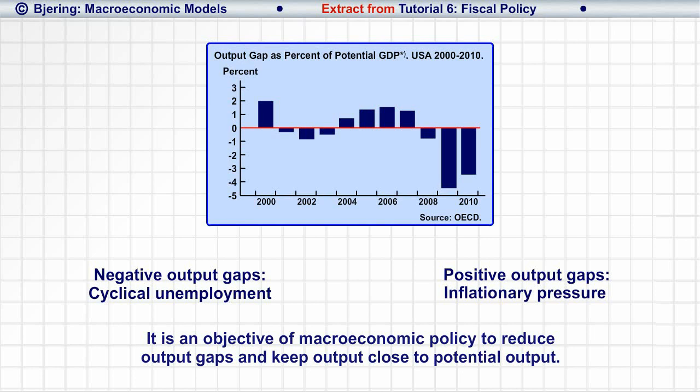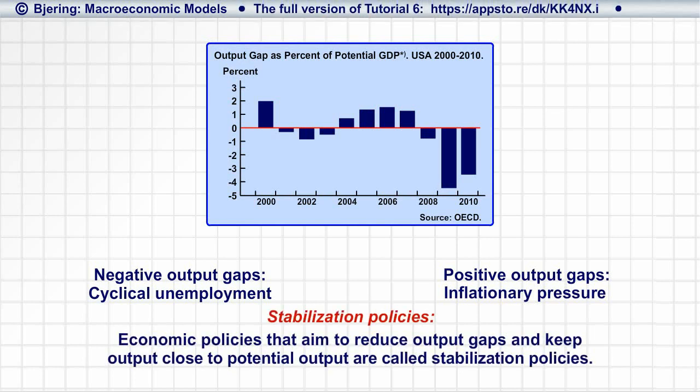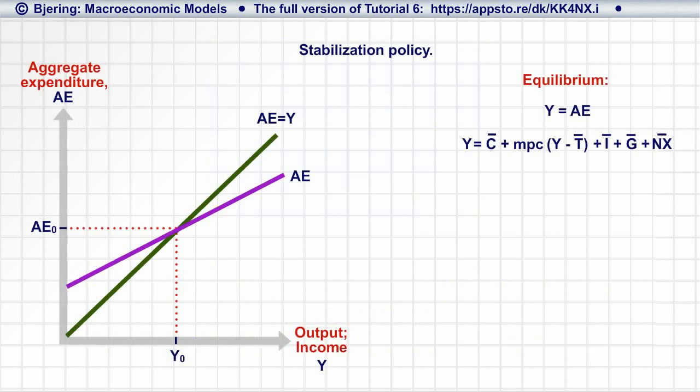Such economic policies are called stabilization policies. Most stabilization policies are based on the short-term Keynesian model of the economy and, in particular, on its relationship between planned aggregate expenditure, AE, and equilibrium output and income, Y.